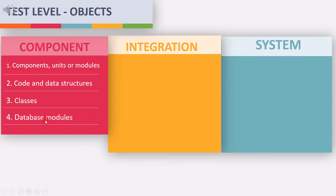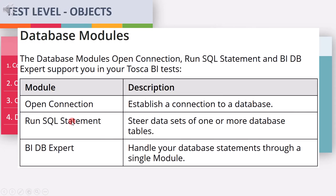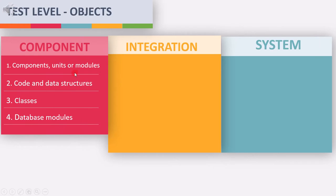The last test object for component testing is database module. When we work with SQL Server, we work on database modules. For example, OpenConnection is a database module which establishes a connection to a database, and we can test this module during component testing. So the test objects of component testing are: component, unit, modules, code, data structure, classes, and database modules.